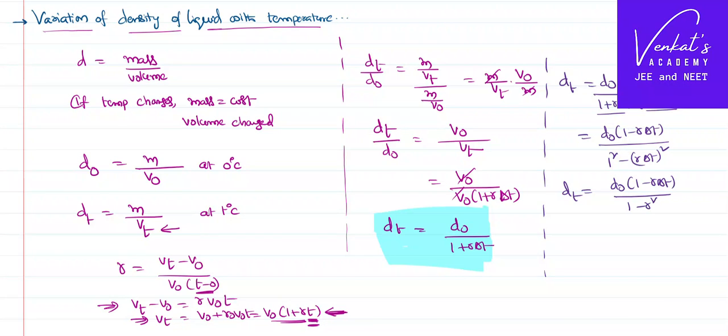A plus b into a minus b formula. So DT is equal to D0 by 1 minus gamma delta T. 1 square is 1 minus gamma square delta T square. But as gamma is a small value, gamma square is very small and can be ignored for an approximation. Then I can write DT is approximately equal to D0 by 1 minus gamma delta T. This is another way of expressing density compared with the previous way.